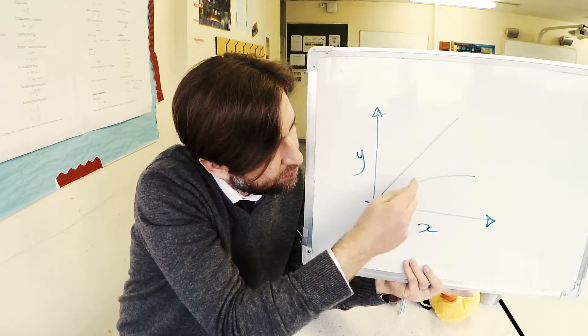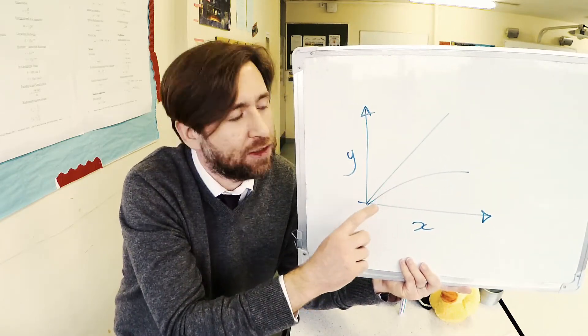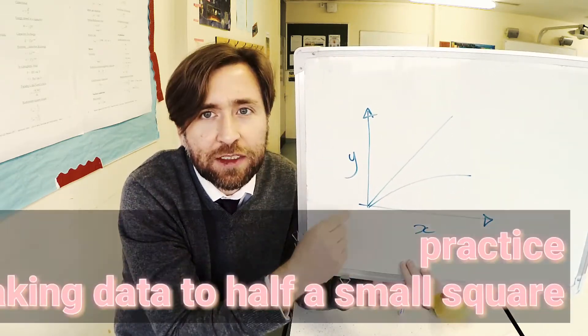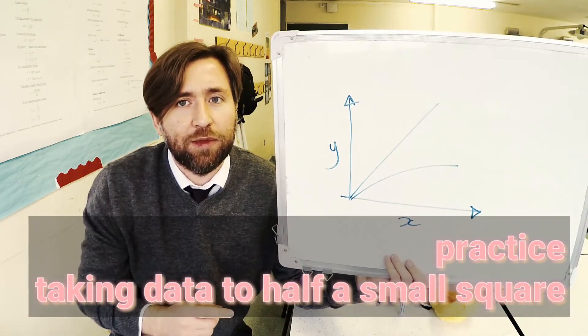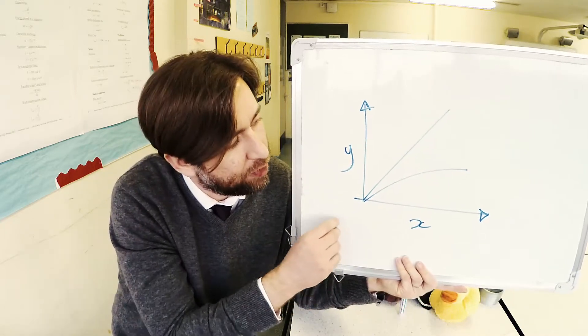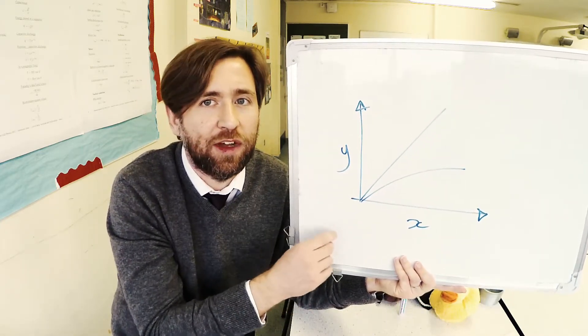You also need to be able to take data from a graph, maybe making comparisons between two points. And you need to work with a graph to half a small square accuracy. A lot of people that I've been finding have been making mistakes because they've not been accurate enough with the graph paper that they're given.